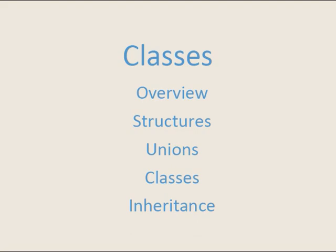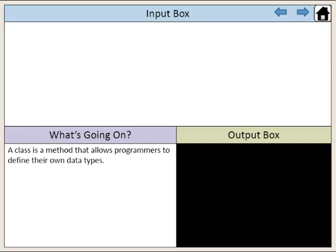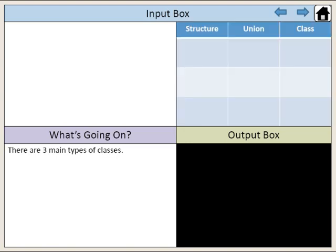C++ Classes. A class is a method that allows programmers to define their own data types. There are three main types of classes: the structure, the union, and the class.